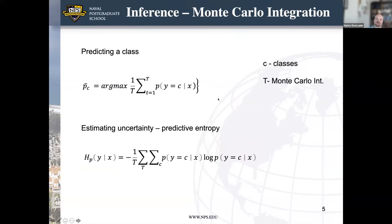For prediction with a probabilistic neural network, we perform Monte Carlo integration — making multiple predictions with the neural network model, averaging them to get a mean estimate and the argmax for the correct class. To estimate uncertainty, because we have this ensemble of predictions, we use predictive entropy extracted from those predictions.